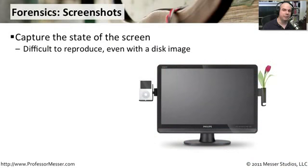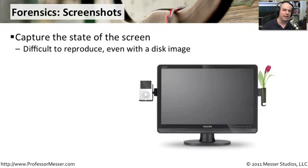Screenshots can be another useful way to grab what's on the screen. Sometimes it's difficult to reproduce what you may run into when you first walk up to a computer — you see something on the screen that looks suspicious. If you were to grab an image of the drive, that allows you to get the information that was on that computer, but it doesn't necessarily allow you to reproduce what's happening on the screen. One of the challenges is how do you take a snapshot of what's on the screen without disturbing the computer?